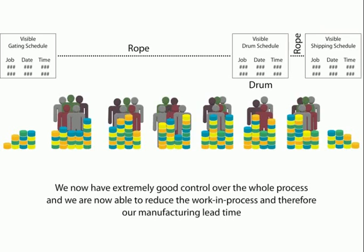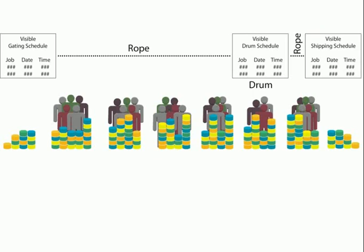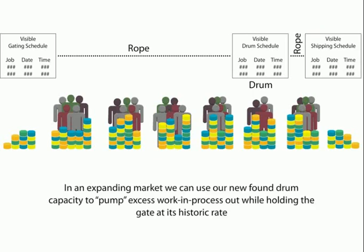We now have extremely good control over the whole process and are able to reduce the work in process and therefore manufacturing lead time. We are only focusing on the drum — plan vs. actuals, WIPs, loading, unloading — all that is no more our concern. Every stage now just has to make sure that it is working at the schedule of the drum, which is visibly available to everybody. We have shrunk the lead time of manufacturing. Lead time will go down because the WIP has gone down, and in another simulation I have shown why lead time will go down when WIP goes down.